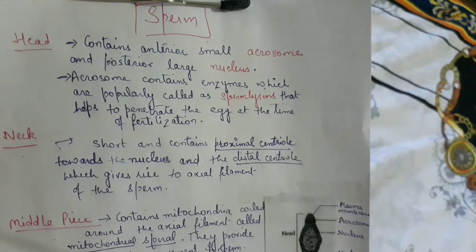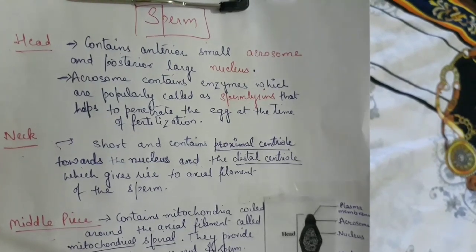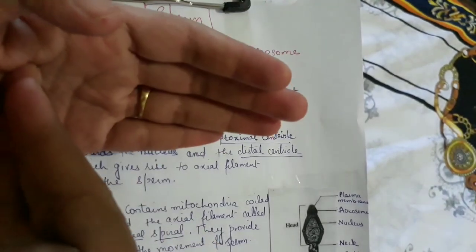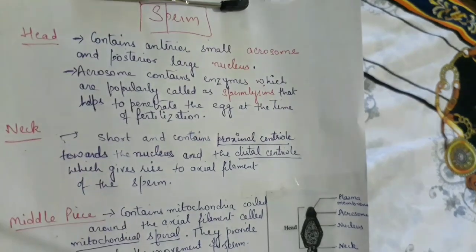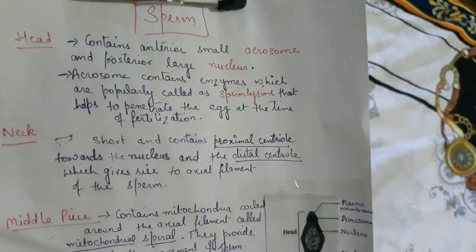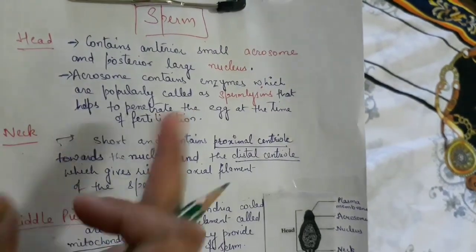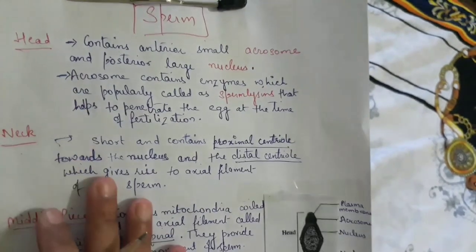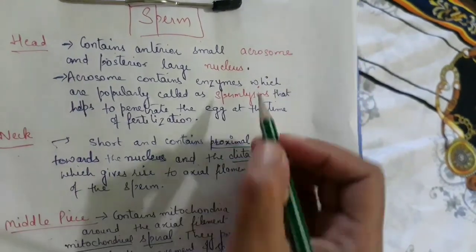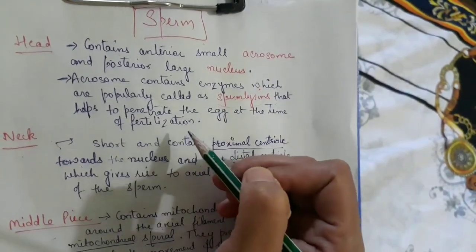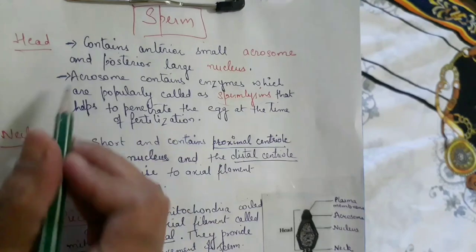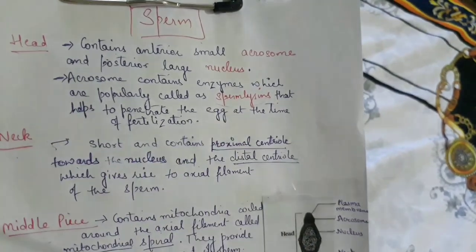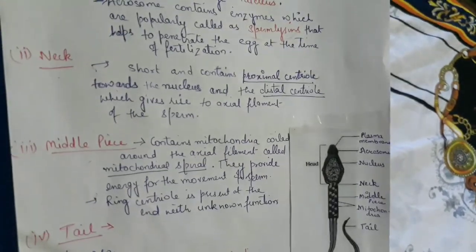Inside the acrosome there are enzymes — popularly called sperm lysins. These enzymes are very important because when the sperm has to fertilize the egg and penetrate into it, there is a wall around the egg. These enzymes will help the sperm lyse through that wall. So the acrosome contains lytic enzymes, which are very important.